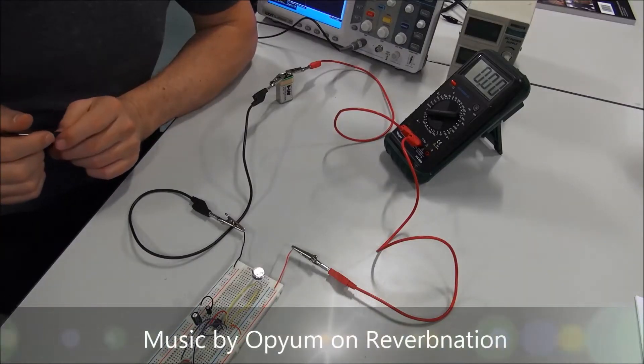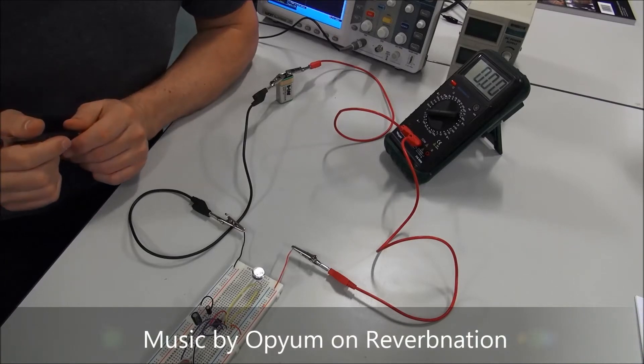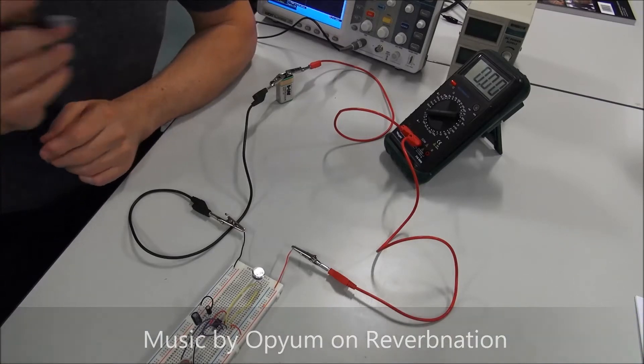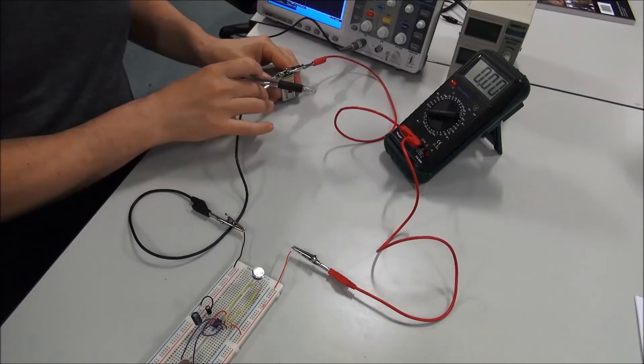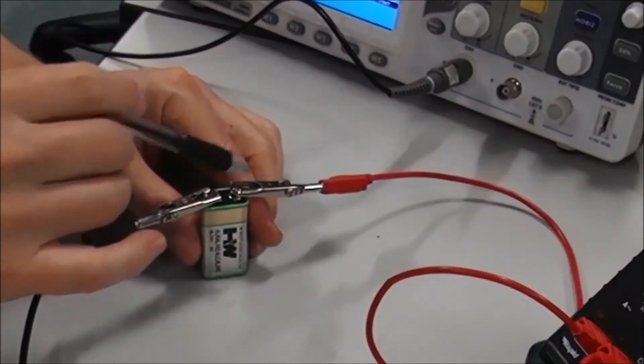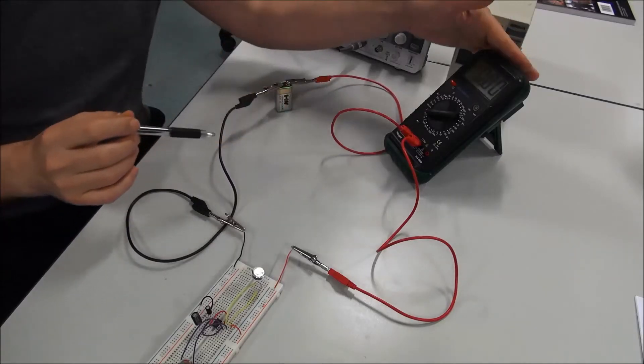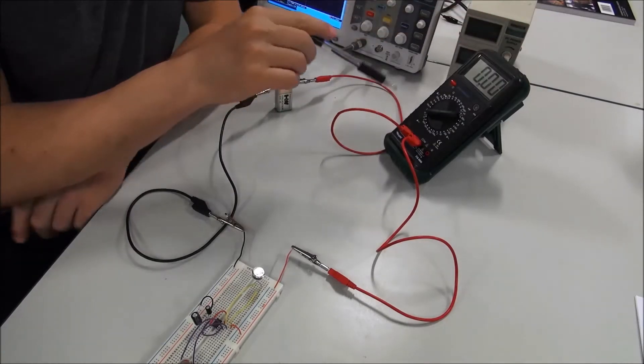The next thing you'll be asked to do is to measure the current drawn by the circuit. It's quite simple. We have our power supply, which is a battery, and the positive of the battery goes to the multimeter this time.